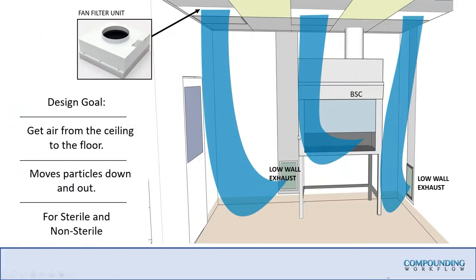The design goal called out in USP 797 — also applicable to USP 800 — is to move air from the ceiling to the floor to ensure good room dilution. USP 797 references low wall returns, or low wall grilles, and in a hazardous drug room these become low wall exhaust because air is exhausted out of the building, as is the biological safety cabinet.